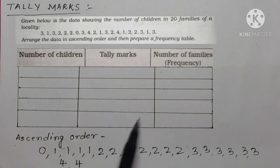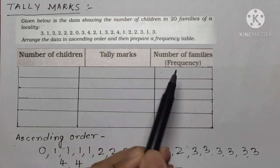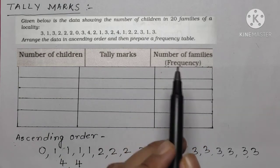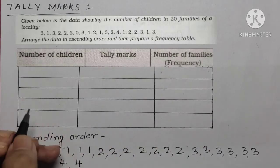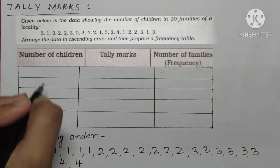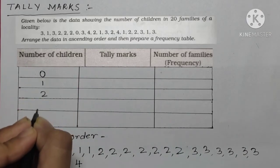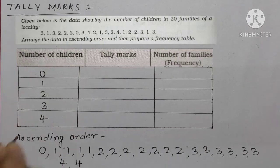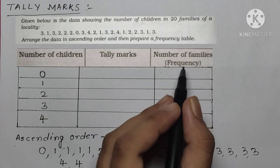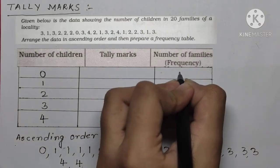Now we prepare a frequency table with three columns: the first column is 'Number of Children', the second is 'Tally Marks', and the third is 'Number of Families' which is the frequency. The number of children values are zero, one, two, three, and four. Zero occurs only one time.